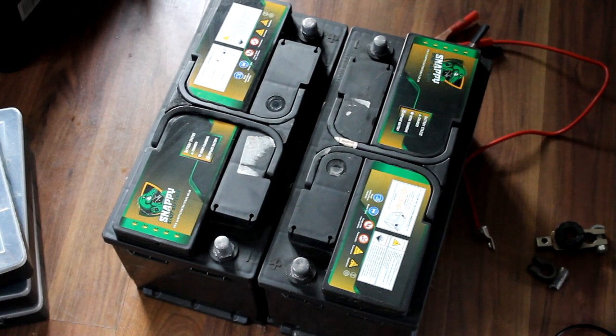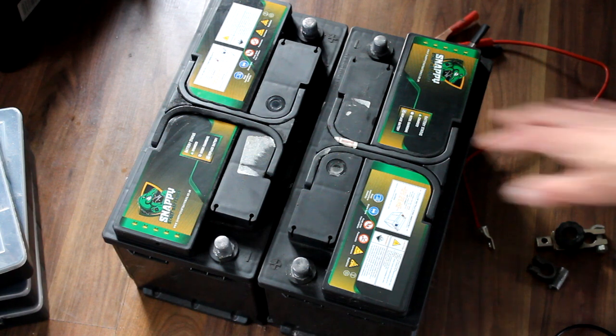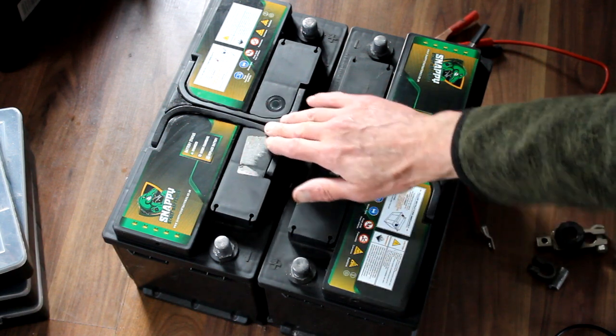I've got a power cut coming up on the 24th of this month. They're taking the power poles down and changing them. So I've got to make some backup power for the day, and I've got these two leisure batteries, leisure caravan batteries.